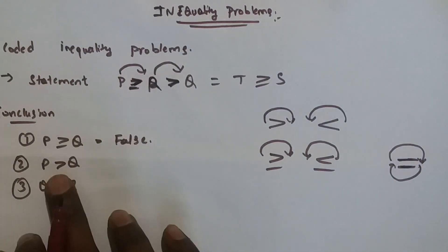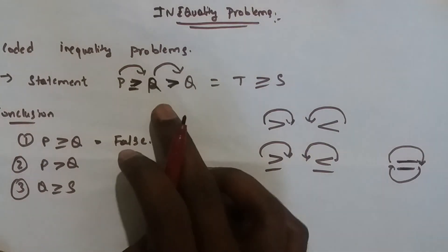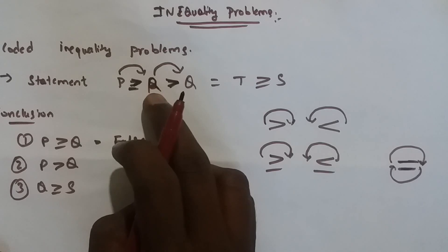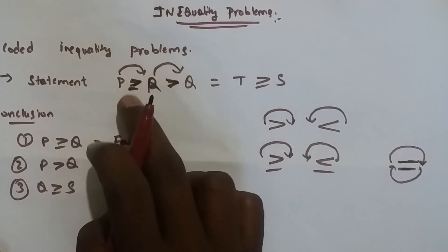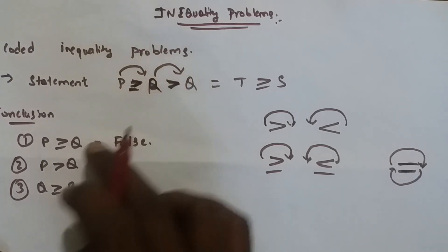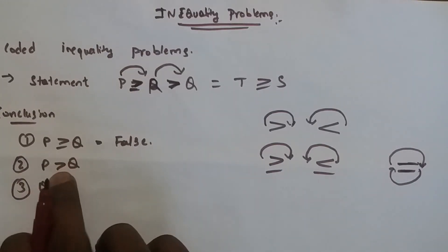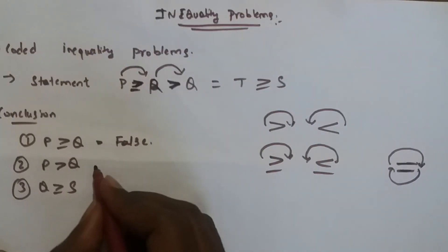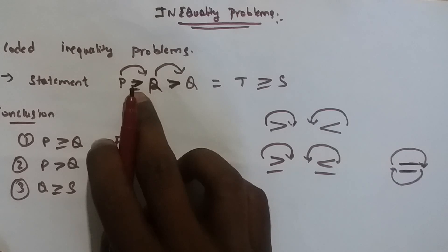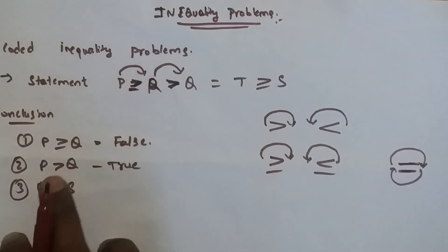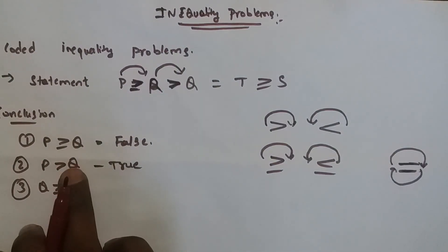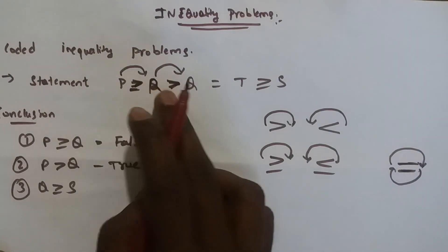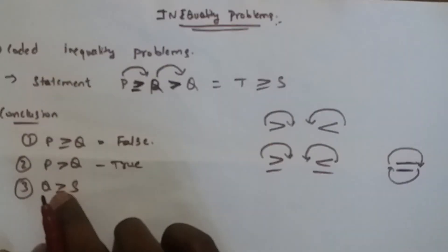See the second conclusion: p greater than q. Here p is forwarding through r to q. In this chain, there is only a greater than symbol — a strict greater than — so it directly passes to q. That is why this statement is valid and true.